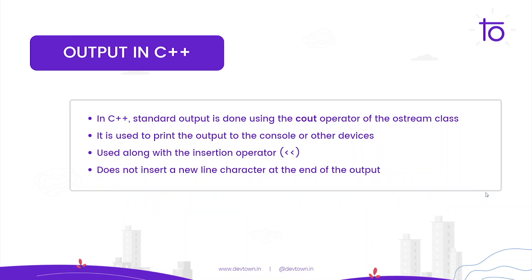In C++, standard output is done using the cout operator of the ostream class. It is used to print the output to the console or other devices, and is used along with the insertion operator. One thing it does is it does not insert a new line character at the end of the output.